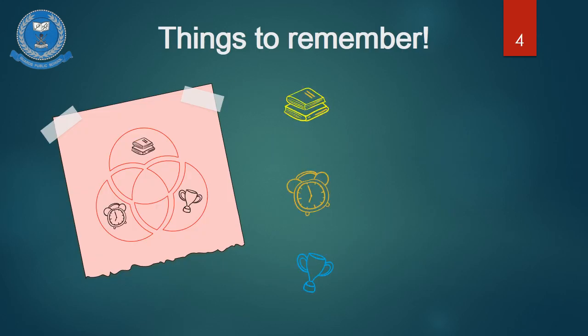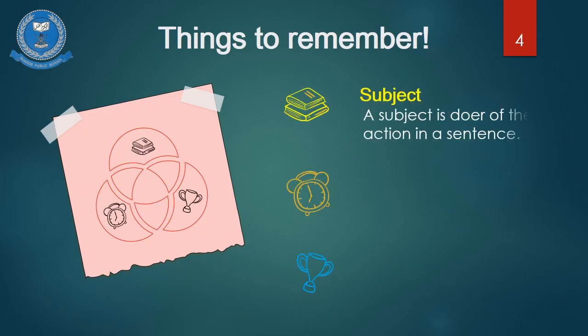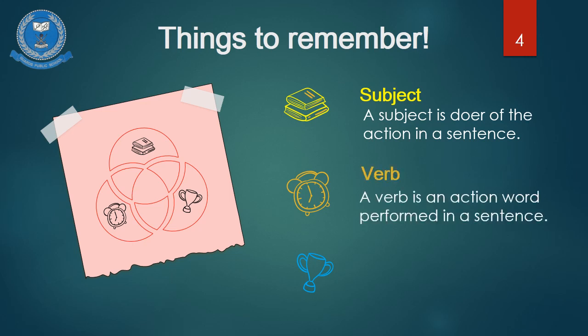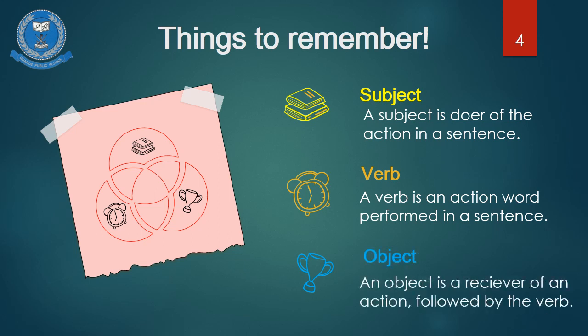Things to remember: A subject is the doer or performer of the action in a sentence. A verb is an action word performed in a sentence. An object is the receiver of an action followed by the verb, or you can say the one for whom the action has been performed.